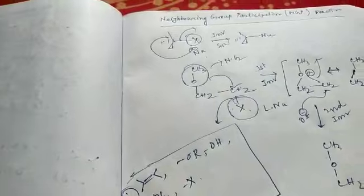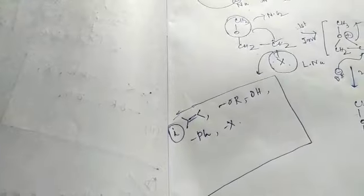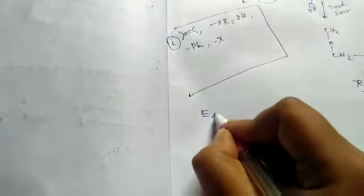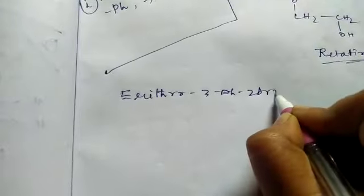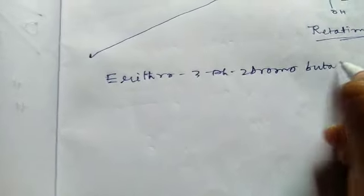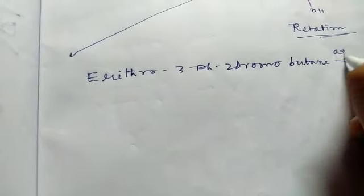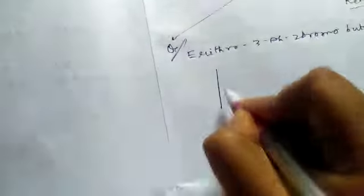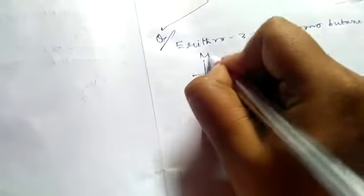So let's see another example. Suppose, draw a molecule, it has 3-phenyl-2-bromobutane. What will be the product? This is the question. Now, draw the molecule in Fischer projection formula: methyl, methyl, phenyl, and bromine, hydrogen, hydrogen. And this is the Fischer projection formula of this molecule.